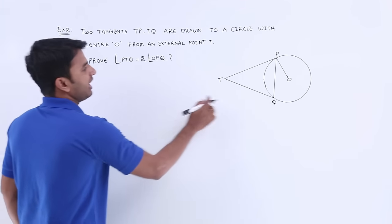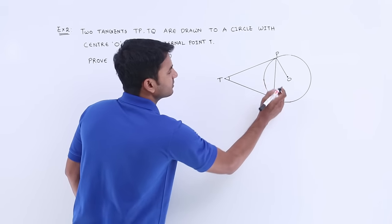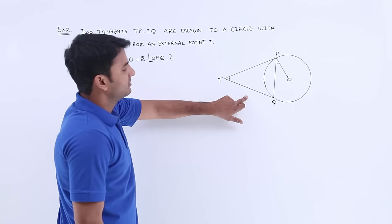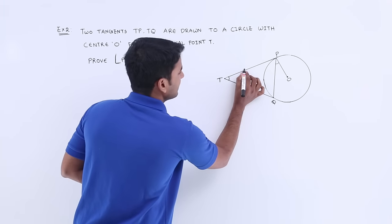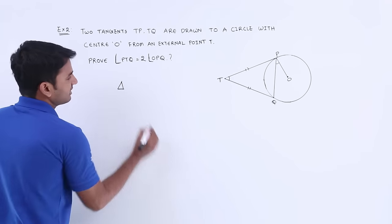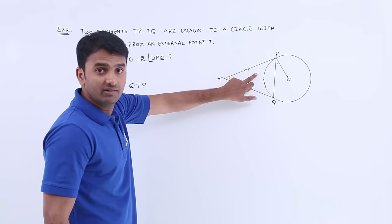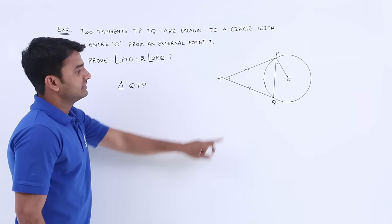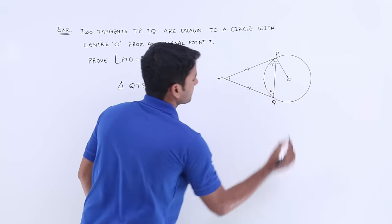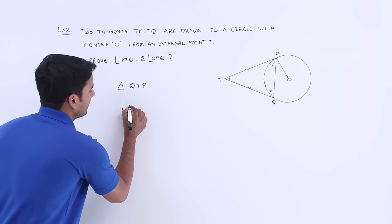We have to prove angle PTQ is equal to two times angle OPQ. These two are tangents, and based on our previous theorem 10.2, this tangent is equal to this tangent. Now let's consider triangle QTP. In this triangle, two sides are equal, so their opposite angles are also equal. Let's consider this angle as x, then this angle is also x.